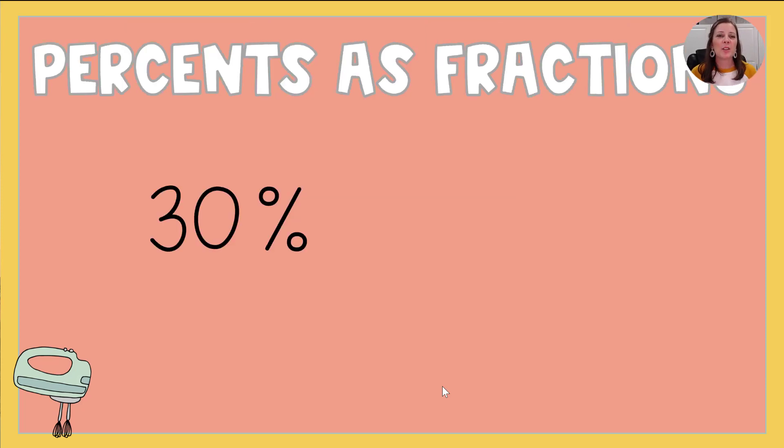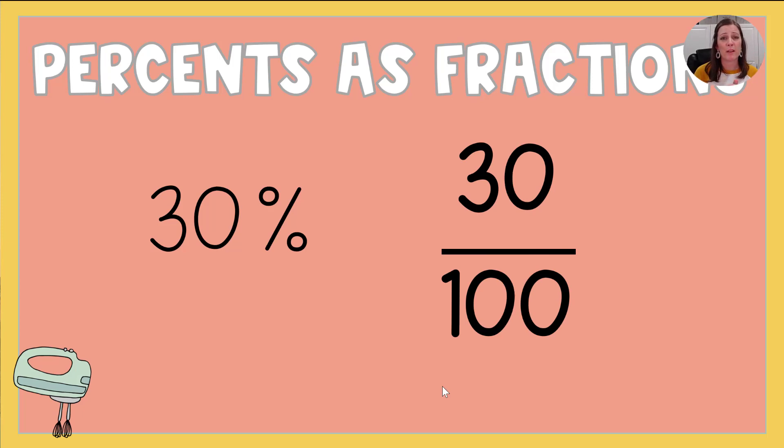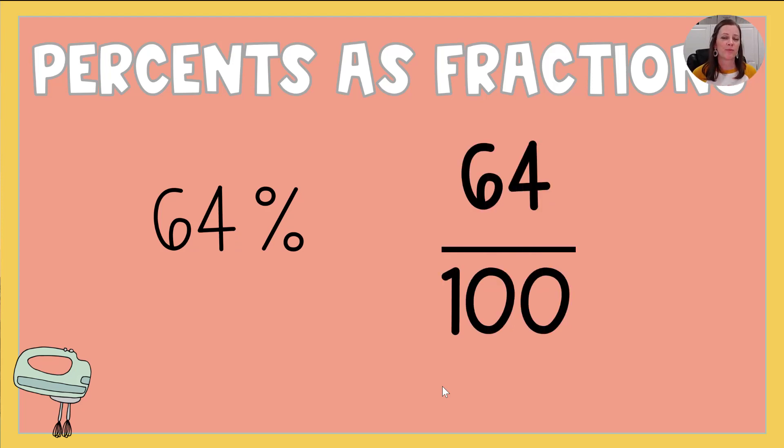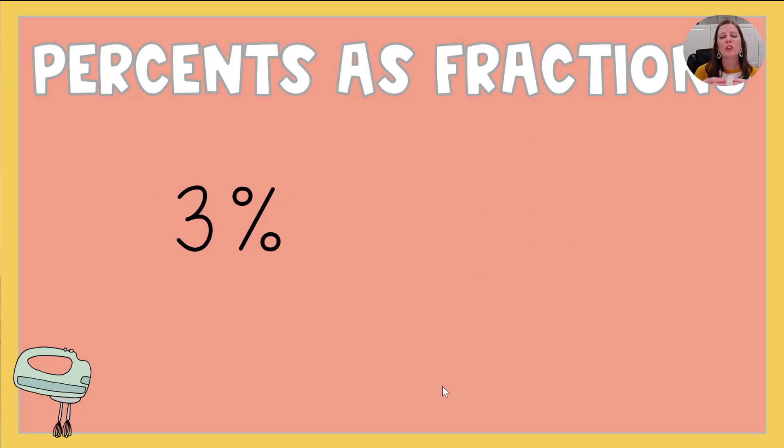All right, our other learning goal was to be able to write percents as fractions. So keeping in mind that the word percent means out of 100, if I say 30 percent, I'm just saying 30 out of 100. So there's my fraction. If I say 64 percent, what I'm really saying is 64 out of 100. There's my fraction. Even when it's just that little 3 percent, it's 3 out of 100. Three hundredths.